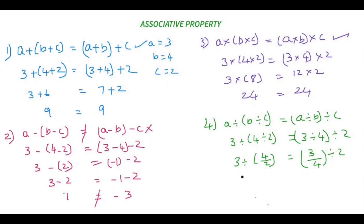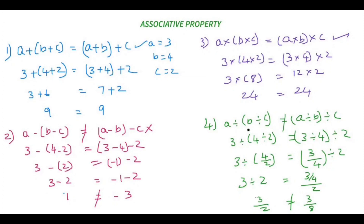On the left side, 4 divided by 2 is 2, so we get 3 divided by 2, which is 3/2. On the right side, 3 divided by 4 cannot be reduced, so we have (3/4) divided by 2, which equals 3/8. As you can see, 3/2 is not equivalent to 3/8, so associative property does not hold good for division.